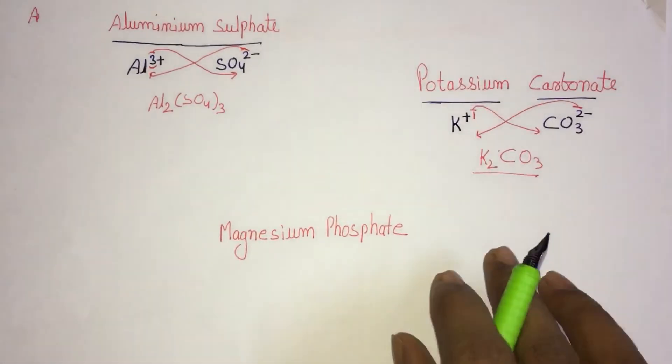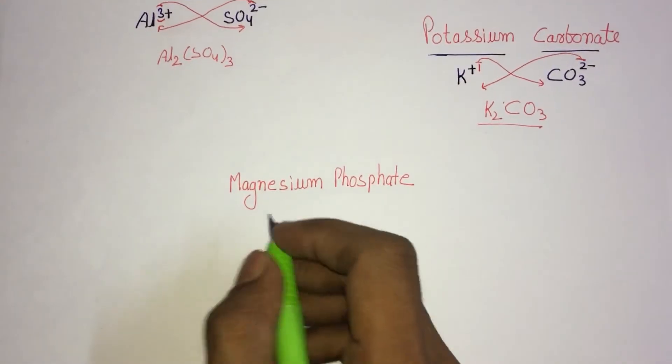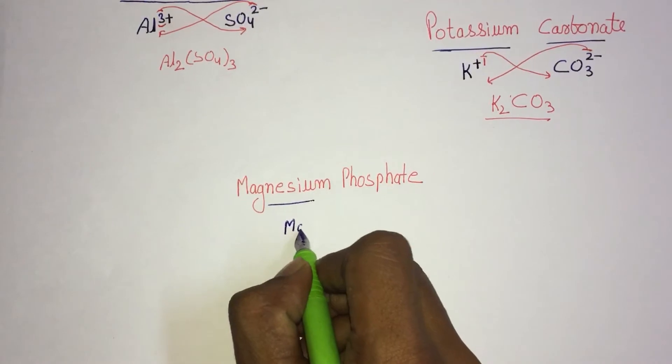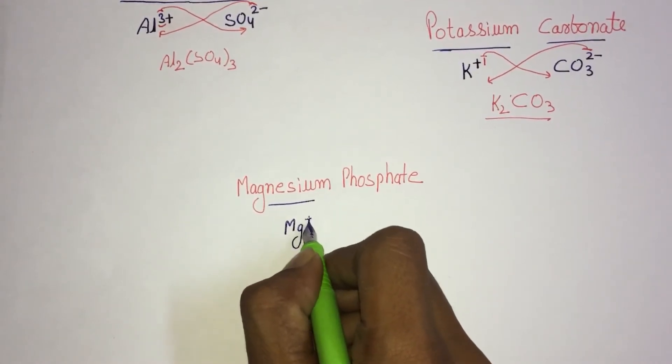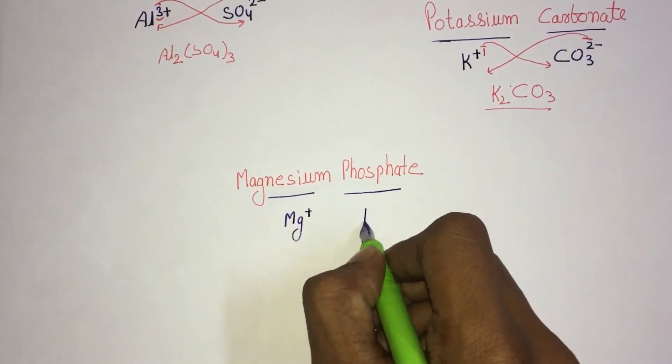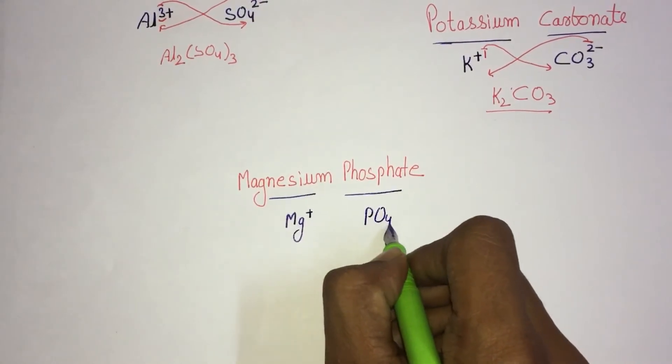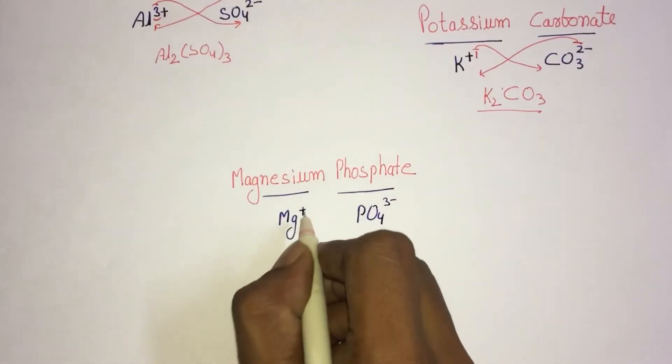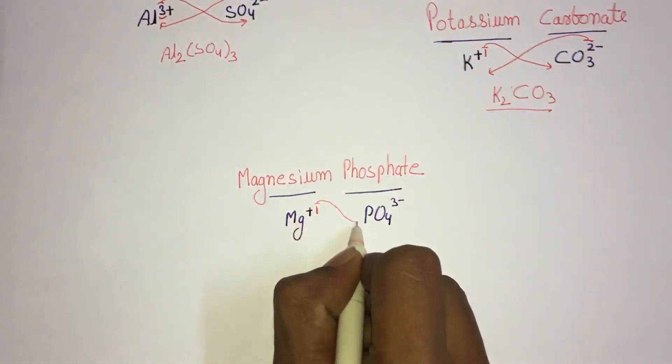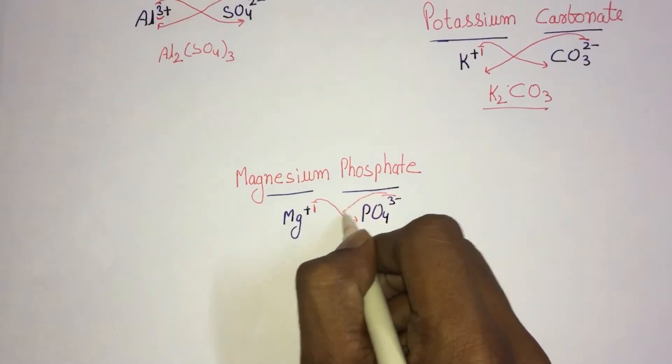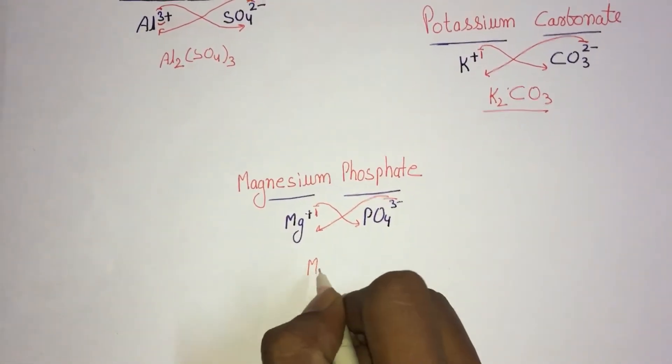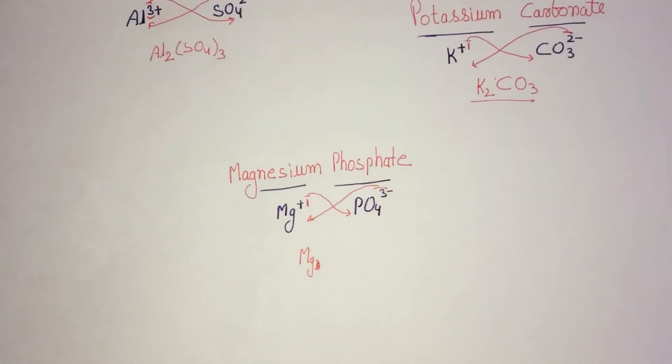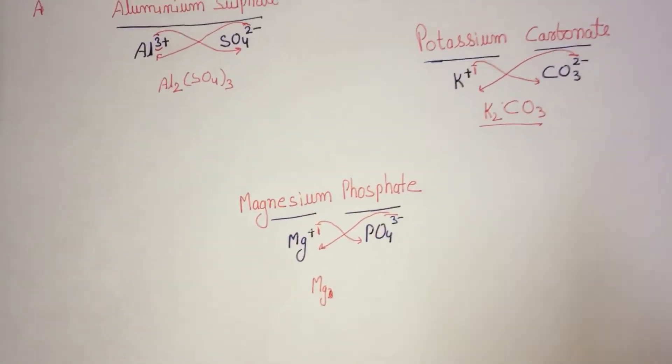Magnesium phosphate: magnesium is Mg+, phosphate is PO4 3-. One goes to phosphate ion, three goes to magnesium, and the formula is Mg3... let me correct myself, magnesium here is 2+.